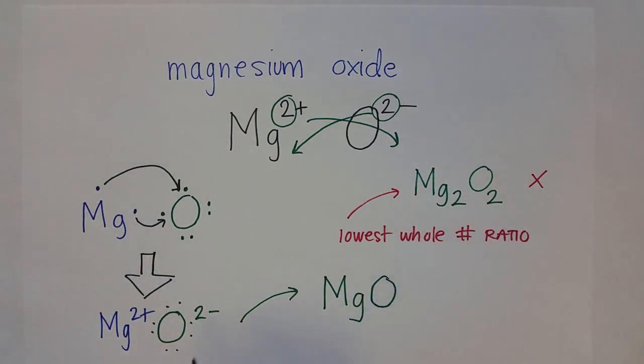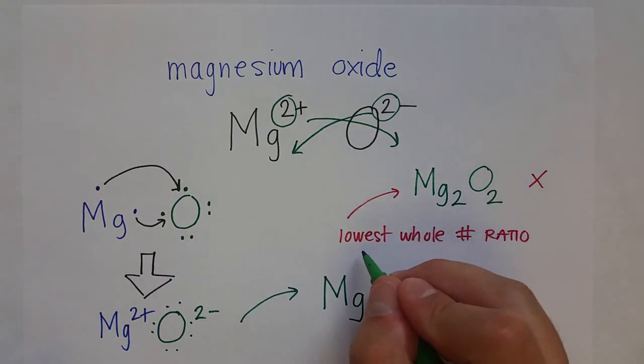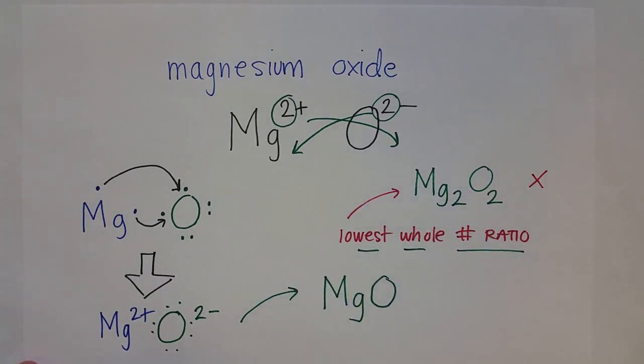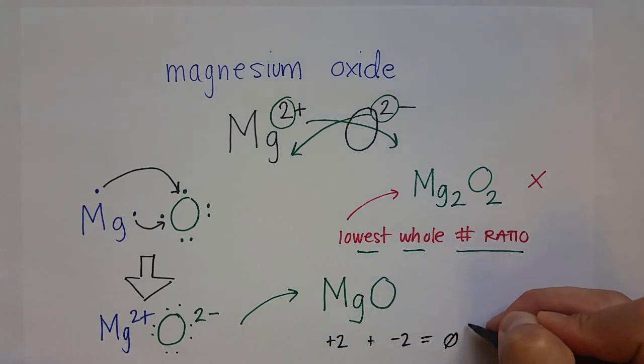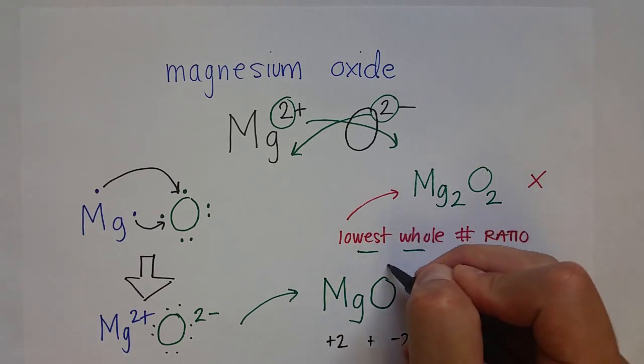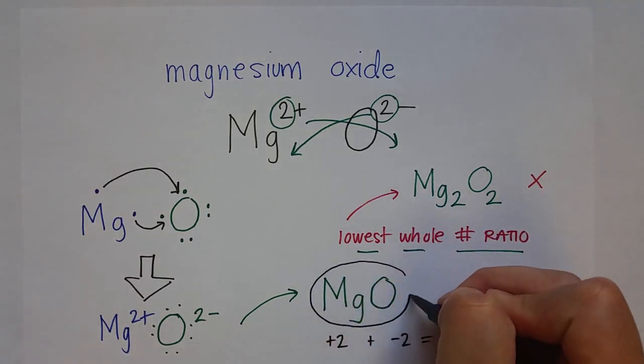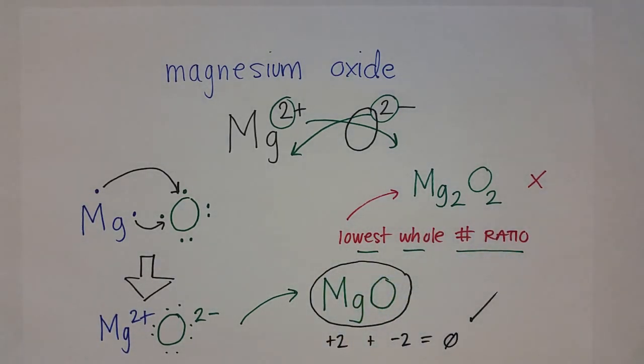And so, we just have to remember, if we do it this way, that we always have to boil it down to the lowest whole number ratio. Or we can always check the math. We've got a plus two plus a negative two. Does that equal zero? And yes, that is correct. And so, magnesium oxide is always the formula MgO, or MgO is always the formula for magnesium oxide.